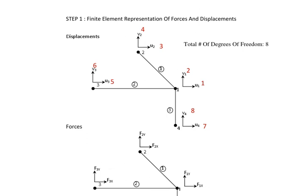Element 1 makes an angle of 45 degrees as given in the problem. However, for the stiffness matrix we need to find θ measured from the positive horizontal axis. Since the element is oriented at 45 degrees from the reference, the total angle θ for element 1 is 135 degrees. We need cos θ and sin θ, which we represent as L and M respectively. So θ = 135° for element 1.